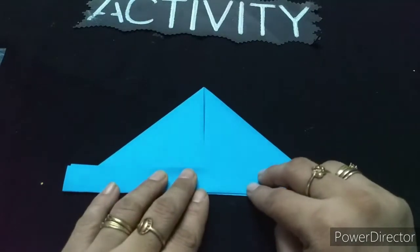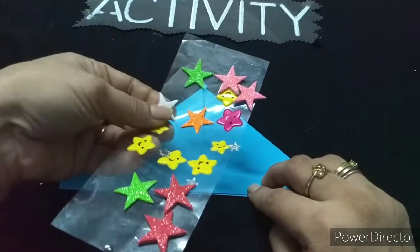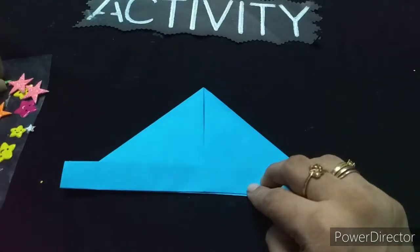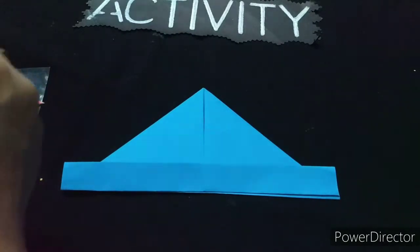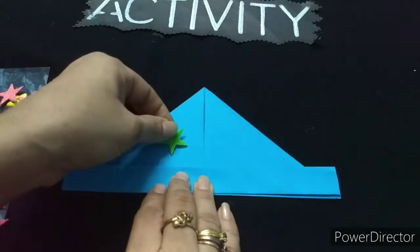Now we will decorate it. What do we do here? We have stars, right? Now we will place the stars. Now we will place this green star here.